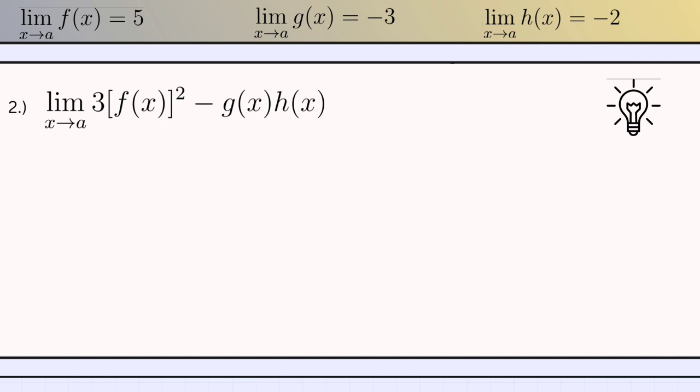For number 2: the limit of 3 times f of x squared minus g of x times h of x as x approaches to a. First, we substitute the values of the function, so that would be 3 times the limit of 5 as x approaches to a, squared, minus the limit of negative 3 as x approaches to a, times the limit of negative 2 as x approaches to a.